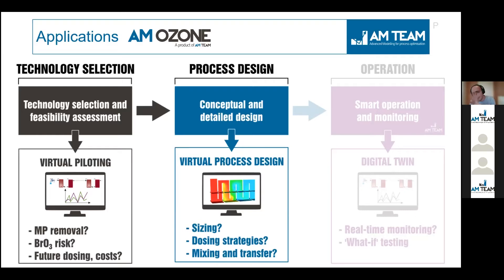Moving to the design phase — both conceptual and detailed — AMAZON can help you define the optimal reactor size, select the best ozone injection method, and determine which dosing strategy to apply. For detailed reactor design, we can combine the AMAZON model with computational fluid dynamics (CFD) simulations to optimally design your reactor and assess the effect of mixing on bromate formation and ozone transfer efficiency. This helps design a high-performance system without inflating investment costs.